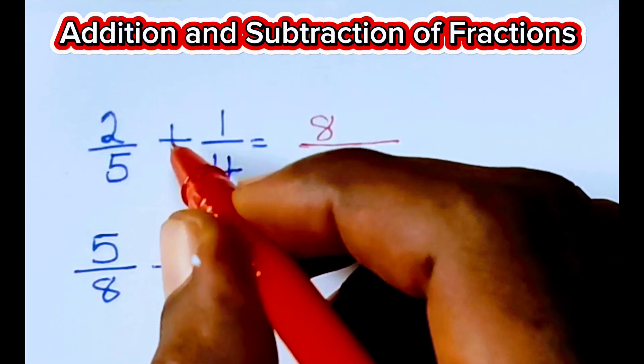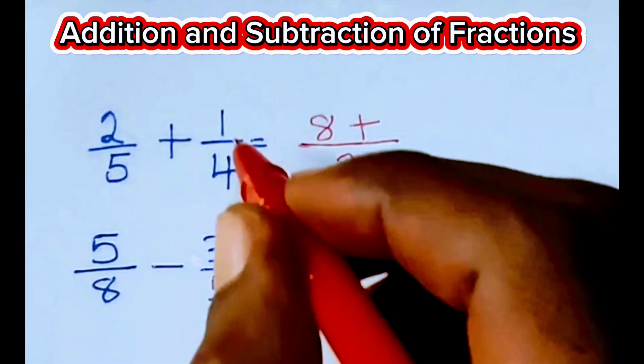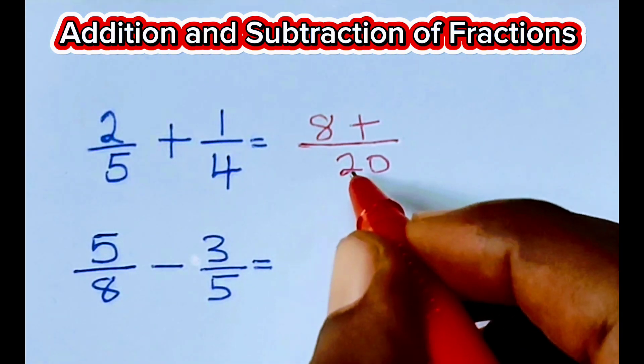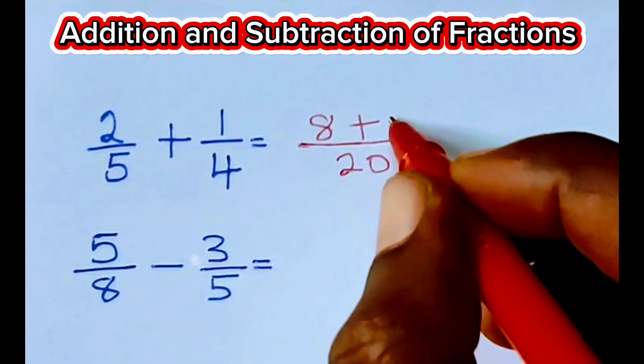Whatever sign you have here, place it here. And then you do the same to this fraction. 20 divided by 4, that's 5. 5 times 1 is 5.